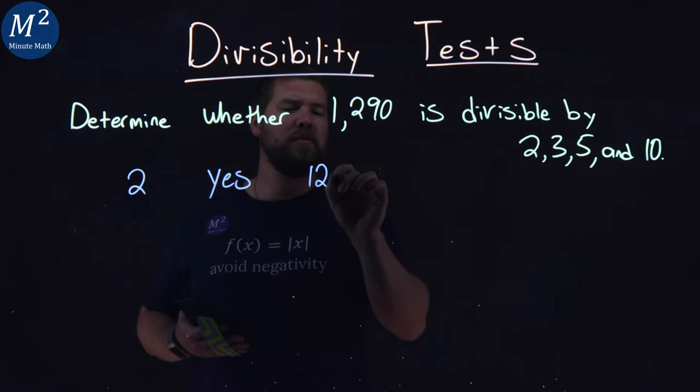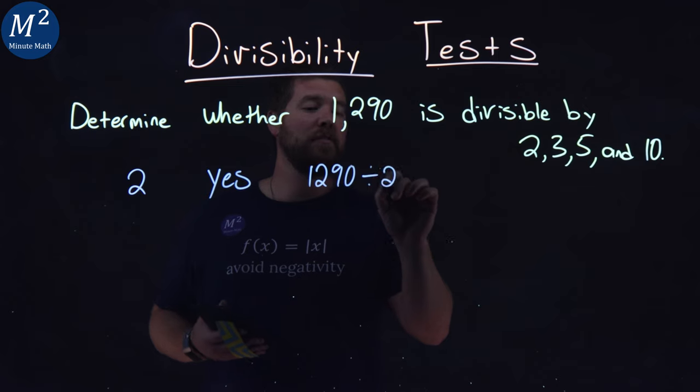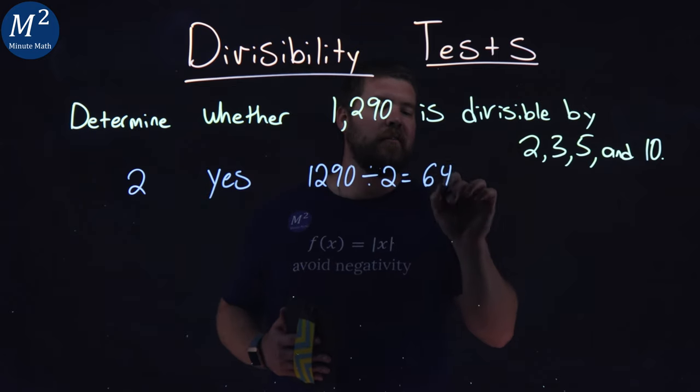And we can check that. 1,290 divided by 2 comes out evenly to be 645.